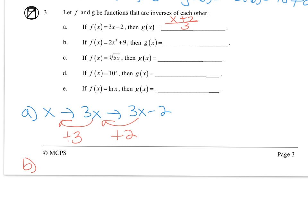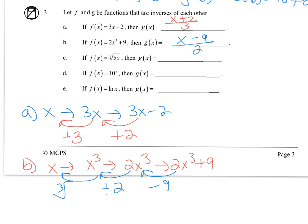For part b, we start with x, then cube it, then multiply by 2, then add 9. Going backwards, subtract 9, divide by 2, then take the cube root. So the inverse is the cube root of (x - 9) divided by 2.